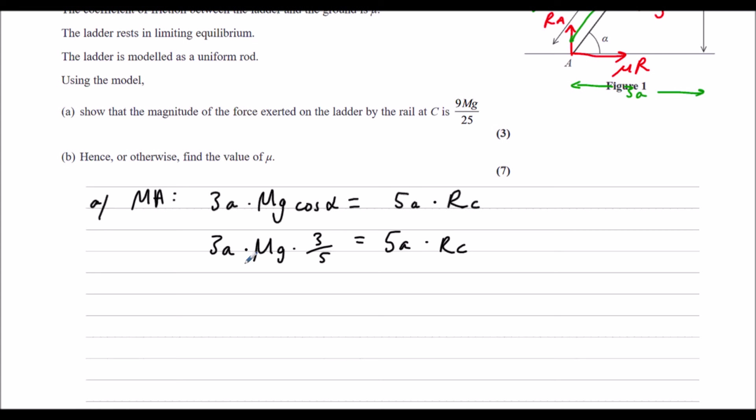So we have three A times mg times three fifths equals five A times the reaction at C. So divide both sides by A. That goes. Three threes are nine. So we've got nine fifths mg is equal to five times the reaction at C. And divide both sides by five. Nine over 25 mg is the reaction at C. And that is what we wanted.